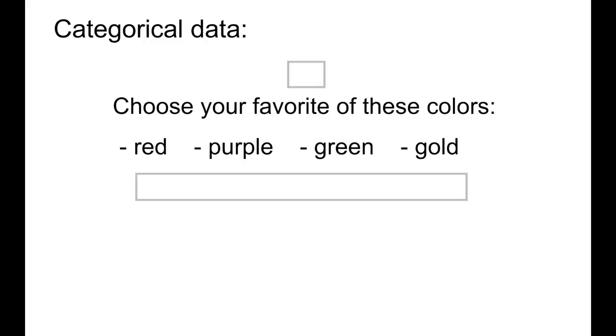Categorical data would be something that gives you options in a question. For example, choose your favorite of these colors: red, purple, green, gold.